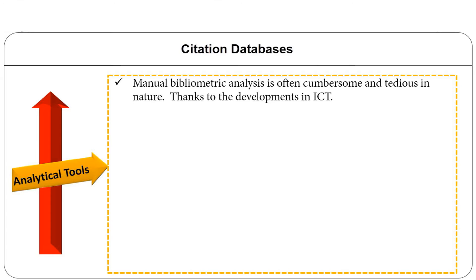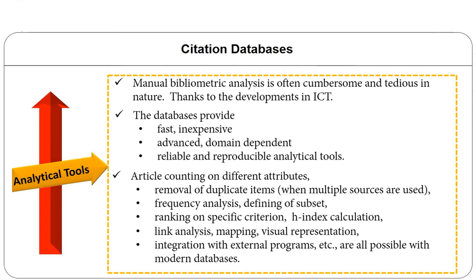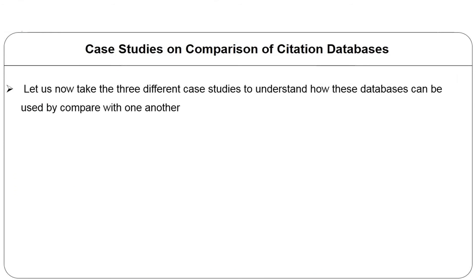Manual bibliometric analysis is often cumbersome and tedious. Thanks to the development of information and communication technologies, databases now provide fast, inexpensive, advanced, domain-dependent, reliable and reproducible analytical tools. Article counting on different attributes, duplicate item identification, frequency analysis, defining subsets, ranking by specific criterion, and h-index calculations are all possible with modern databases.